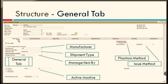Let us move to the General tab, where you define additional general information for items. The highlighted fields include manufacturer, shipment type, manage item active/inactive, phantom, and issue method. Under manufacturer, you can specify the manufacturer for the item. Under shipment type, you can specify the means or mode of transport used to perform the shipment.